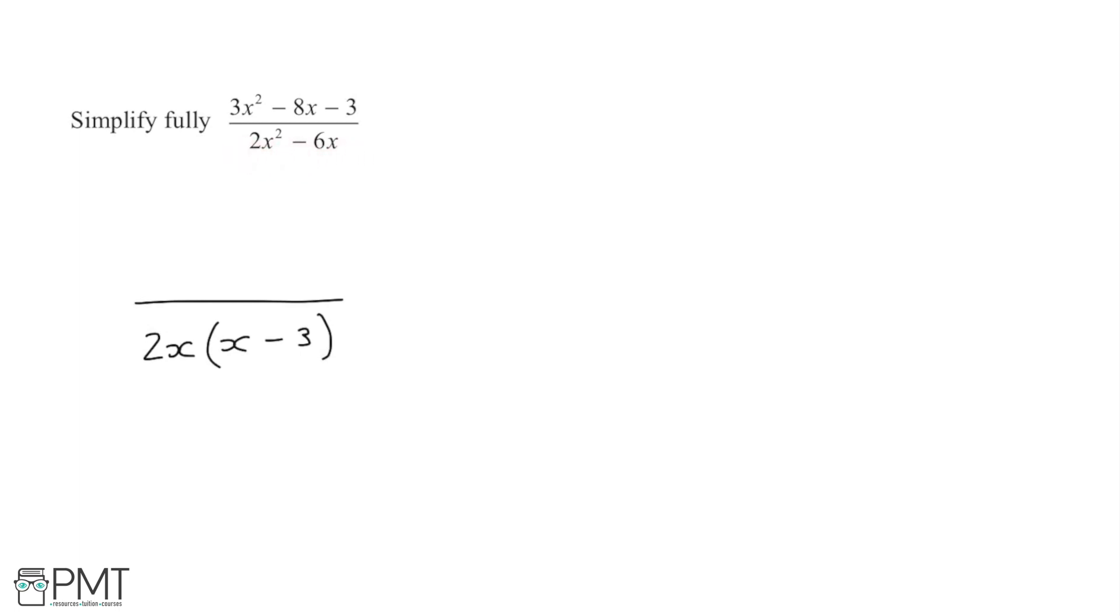So now that I've got this part, looking back to the numerator, I need to work out if I could factorise this in a way that it's going to share one of the factors that the denominator has so that they can cancel out.